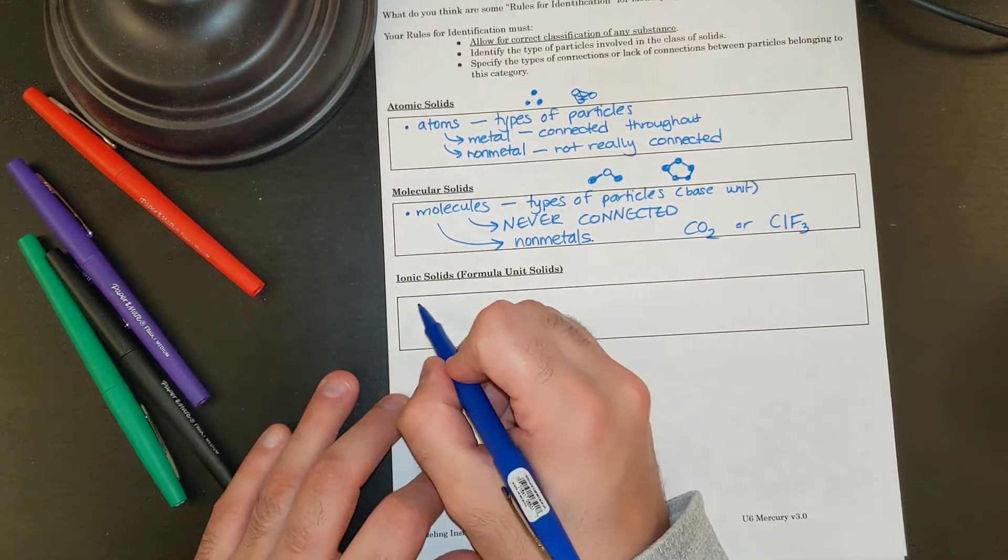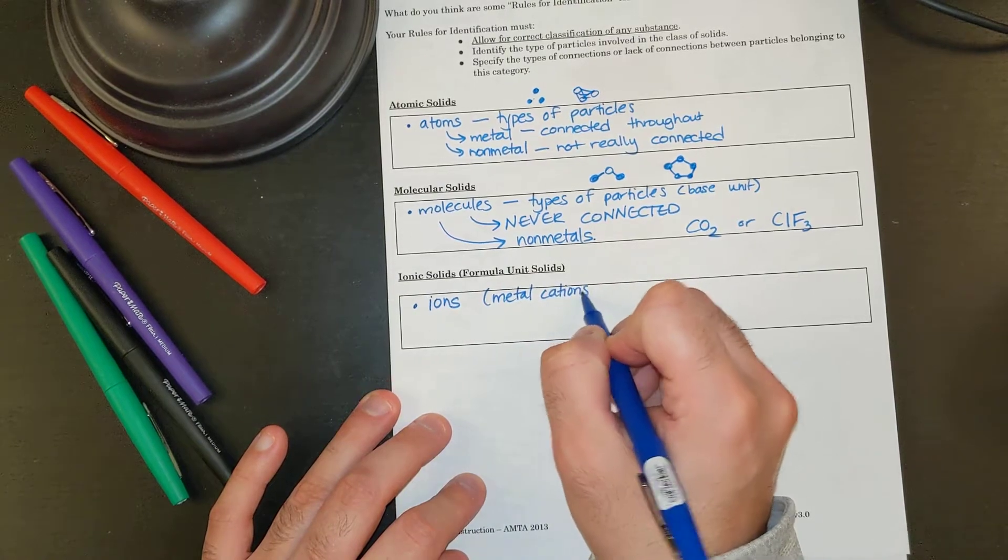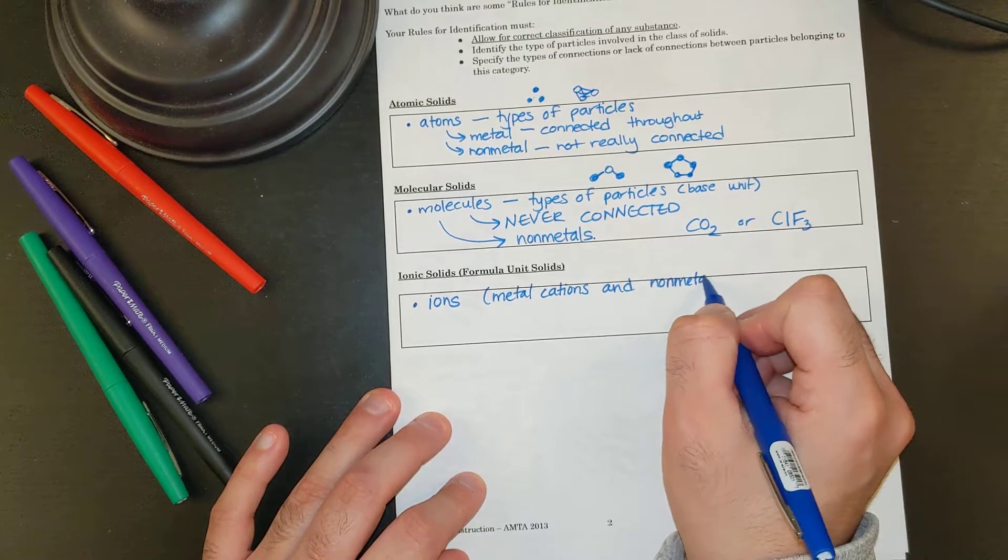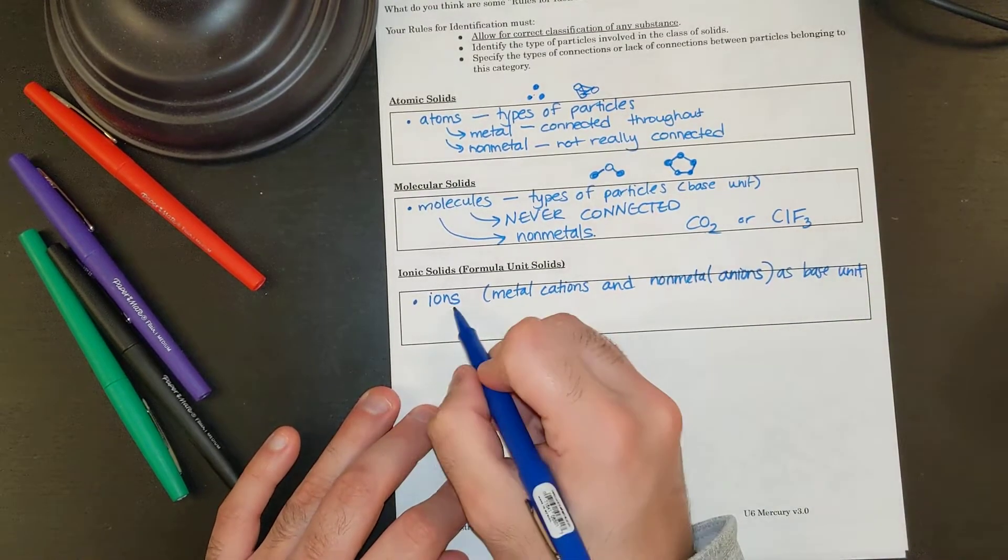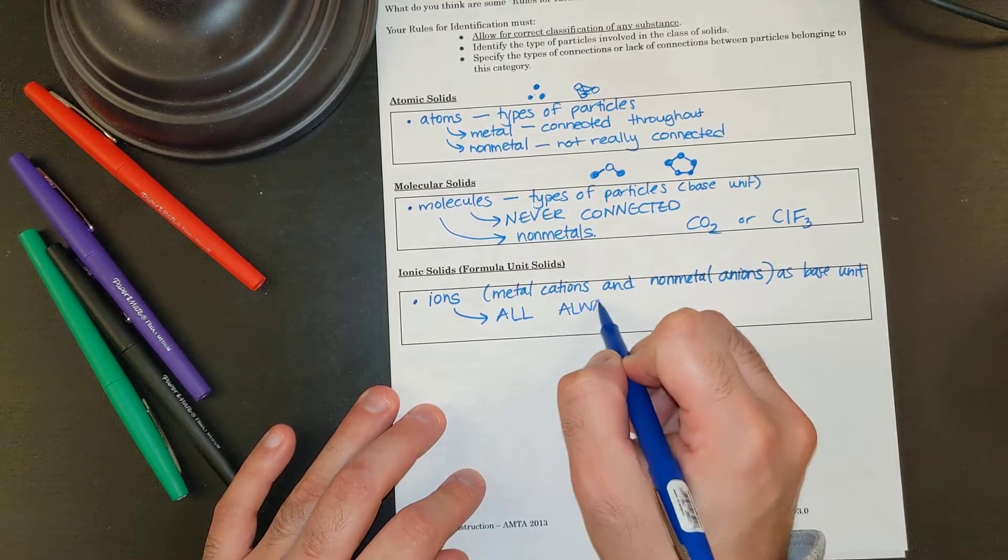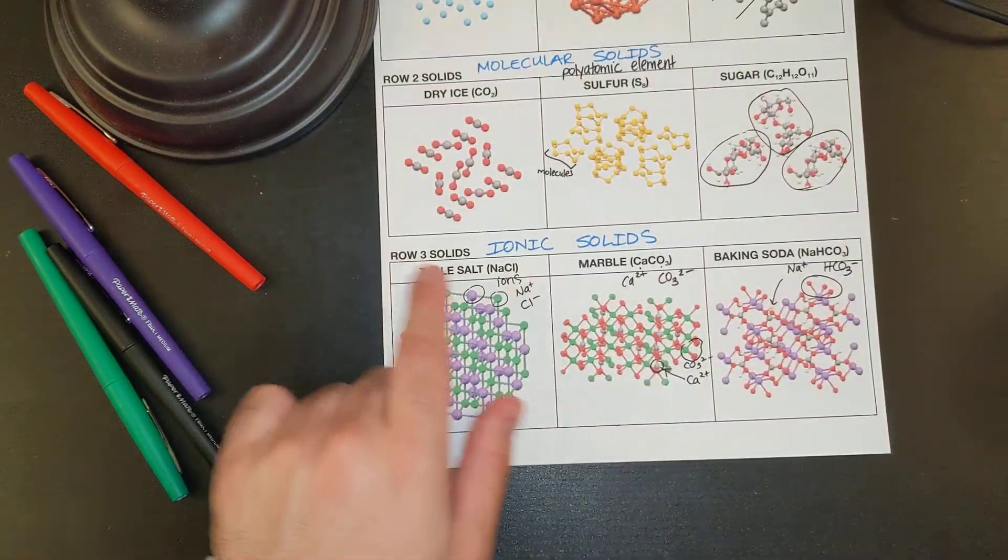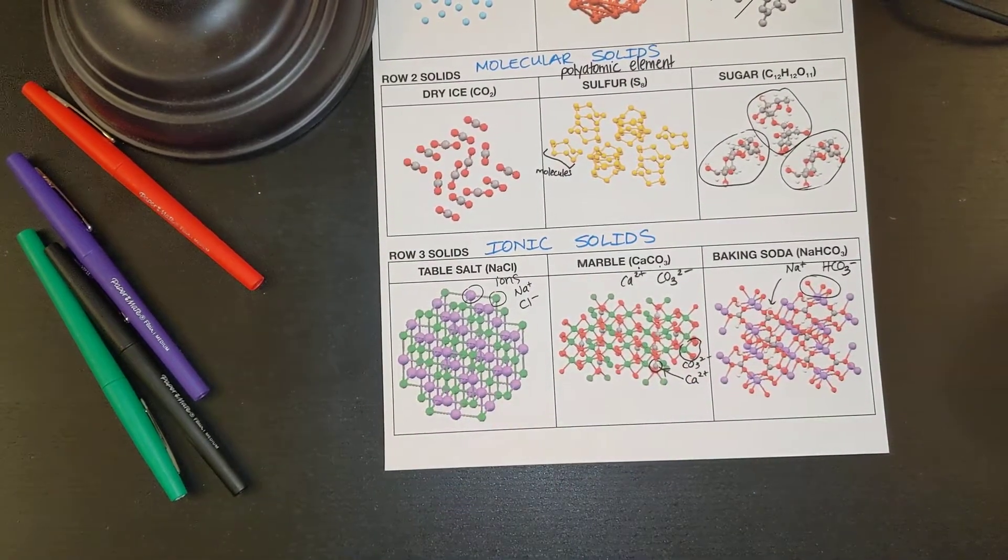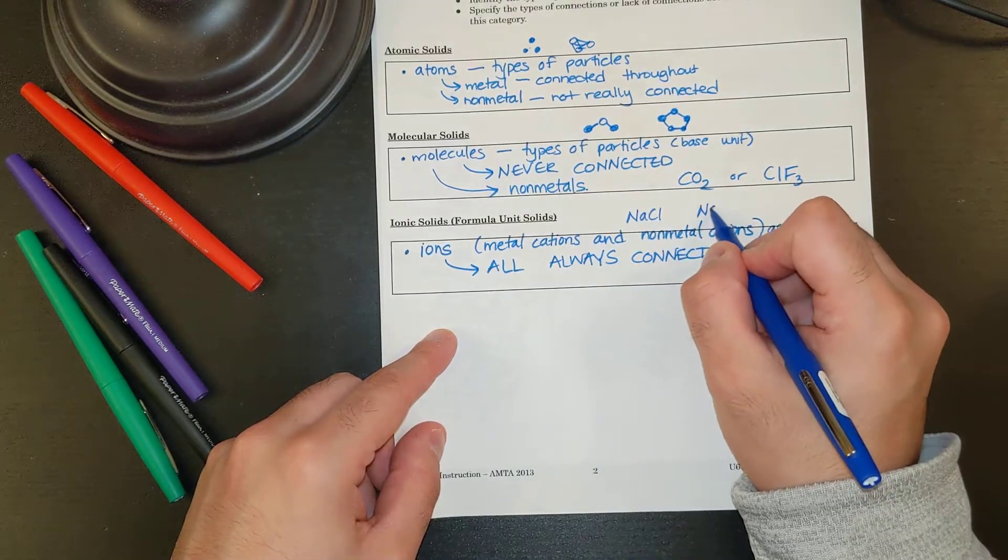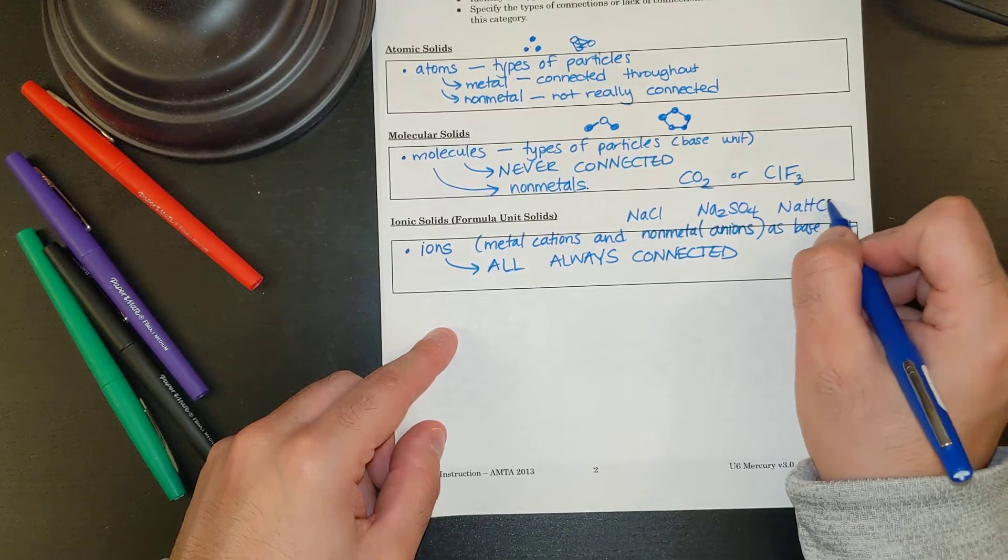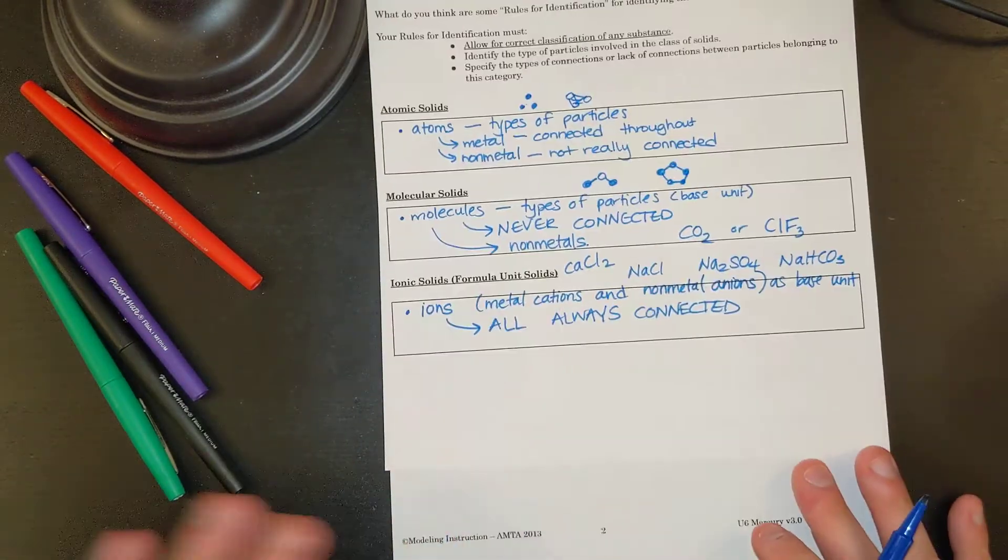And then finally, for ionic solids, it looks like our base unit are ions. We got metal cations and non-metal anions as base unit. And we're going to say that they're all always connected. So if we look at row three solids here, they're all completely connected. And in the formula, we have metal and non-metal, so we have like NaCl. What if I had Na2SO4, or NaHCO3, or CaCl2? Their structure is going to be all connected, and they consist of ions. And so that was our generalization.